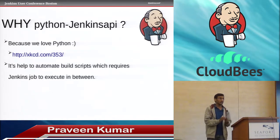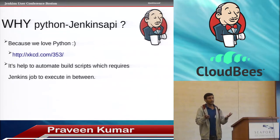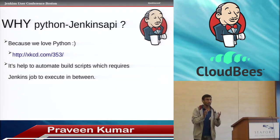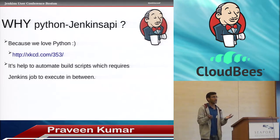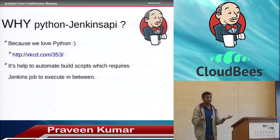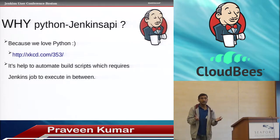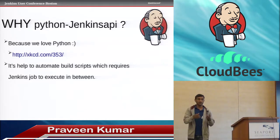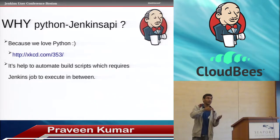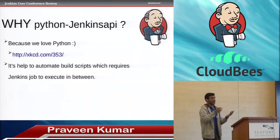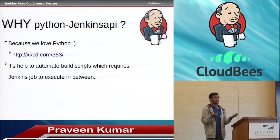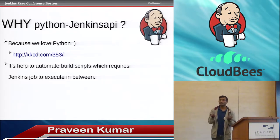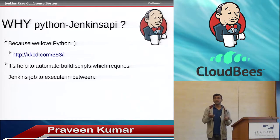There are so many other APIs to talk to Jenkins because Jenkins already provides REST APIs. There are wrappers in all languages — even Java or Ruby. How many of you know the Java wrapper of the Jenkins API?